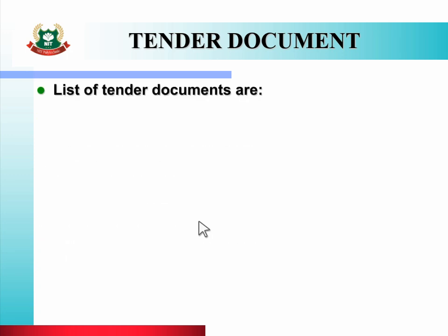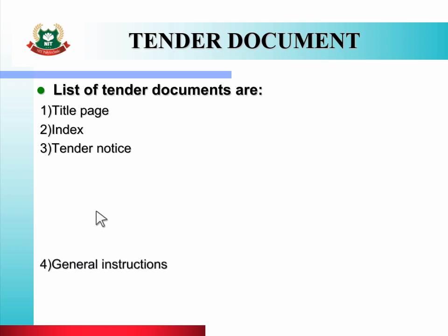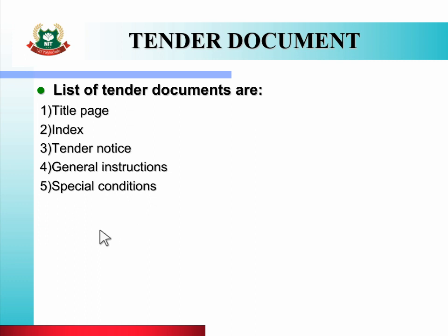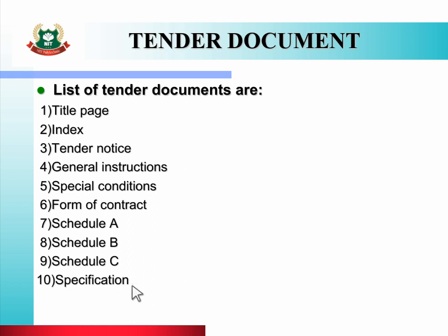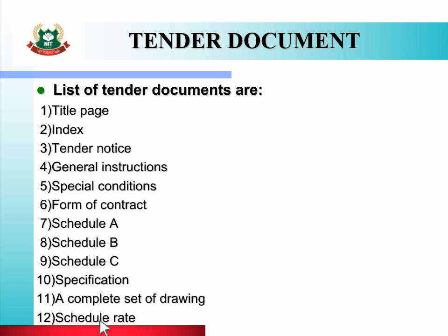The tender document booklet consists of: first, title page; second, index; third, tender notice; fourth, general instructions; fifth, special conditions; sixth, form of contract; seventh, Schedule A; eighth, Schedule B; ninth, Schedule C; tenth, specification; eleventh, a complete set of drawings; and twelfth, schedule rate.